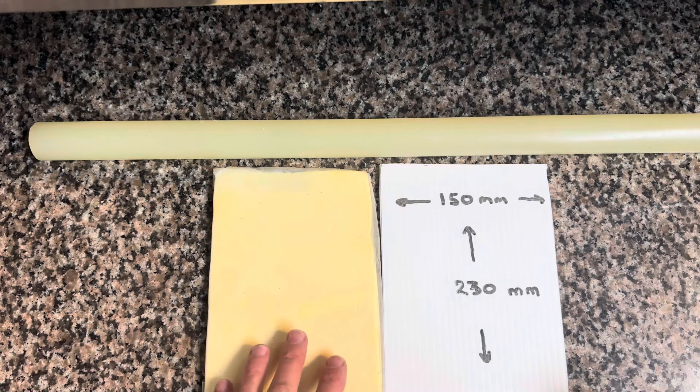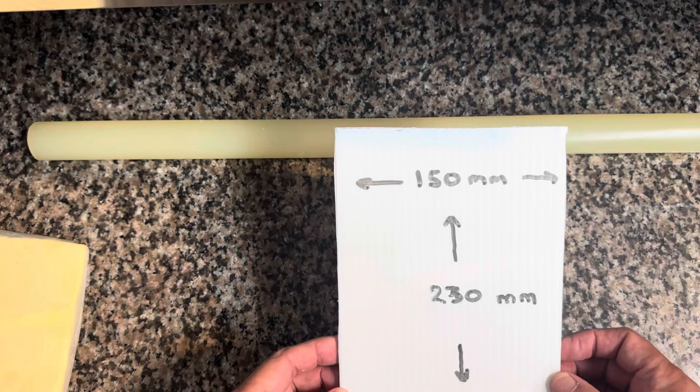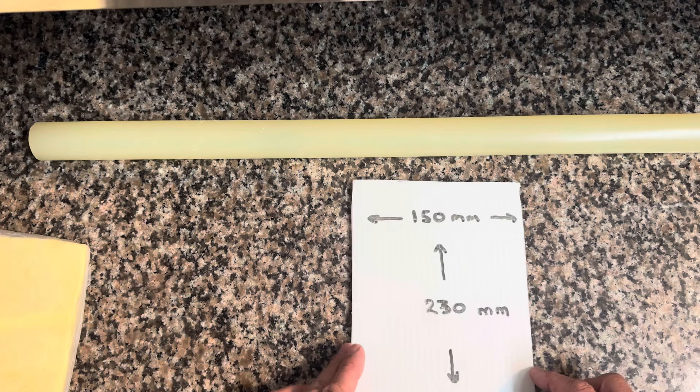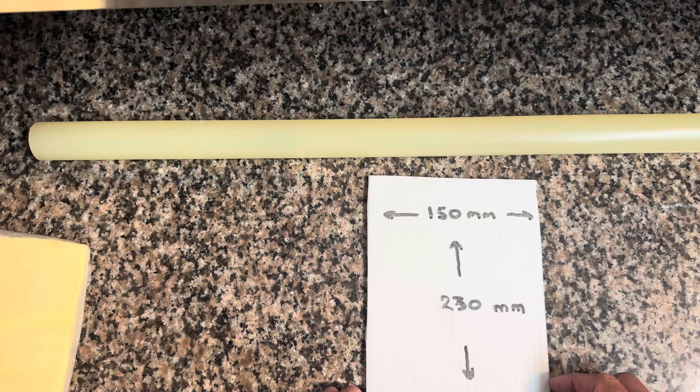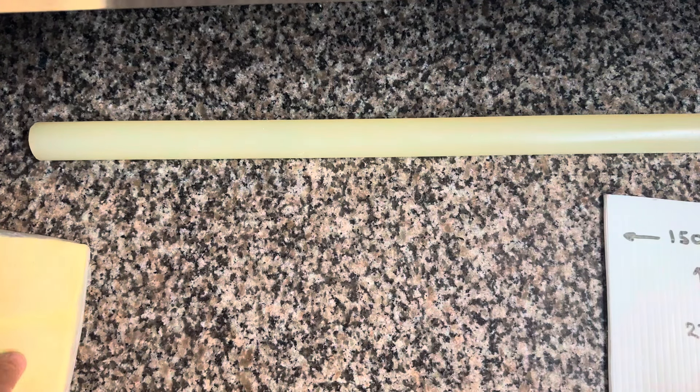What I've done is I've prepared a template using some thick plastic board, and I've cut it to 150 millimeters wide and 230 millimeters long. So I plasticize my butter and then I roll it out using my rolling pin.